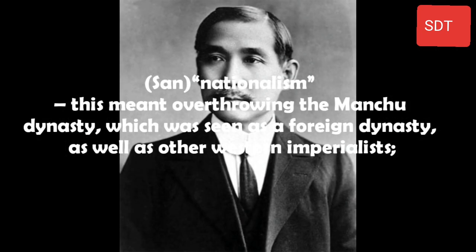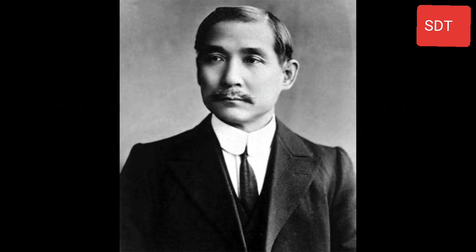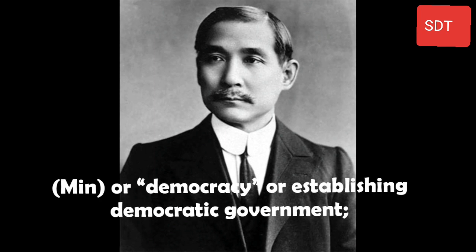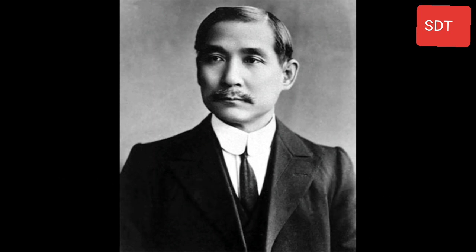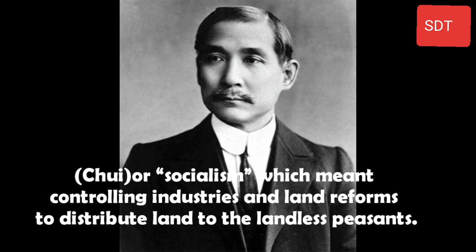The Three Principles were: Nationalism, meaning overthrowing the Manchu dynasty — seen as a foreign dynasty — as well as other western imperialists; Democracy, meaning establishing a democratic government; and Socialism, which meant controlling industries and carrying out land reforms to distribute land to the landless peasants.